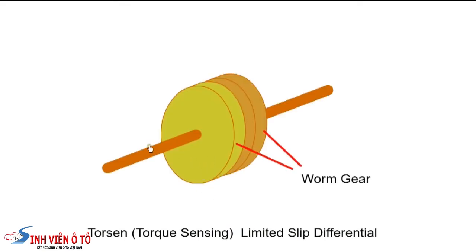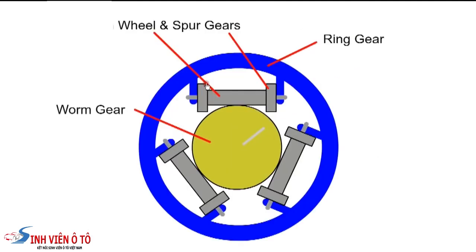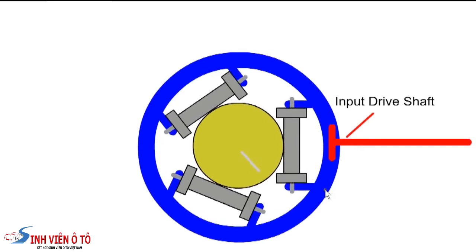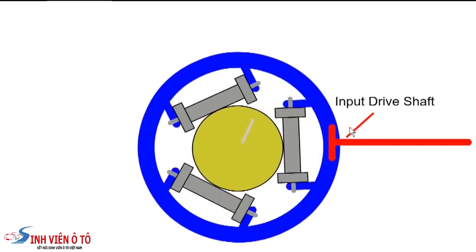The Torsen consists of a worm gear attached to the half shaft. This gear is meshed with a worm wheel that has spur gears at the ends. Here we show one set of worm wheels, but in practice there are a total of three. When travelling in a straight line, the crown gear rotates and drives both half shafts at the same speed via the worms.